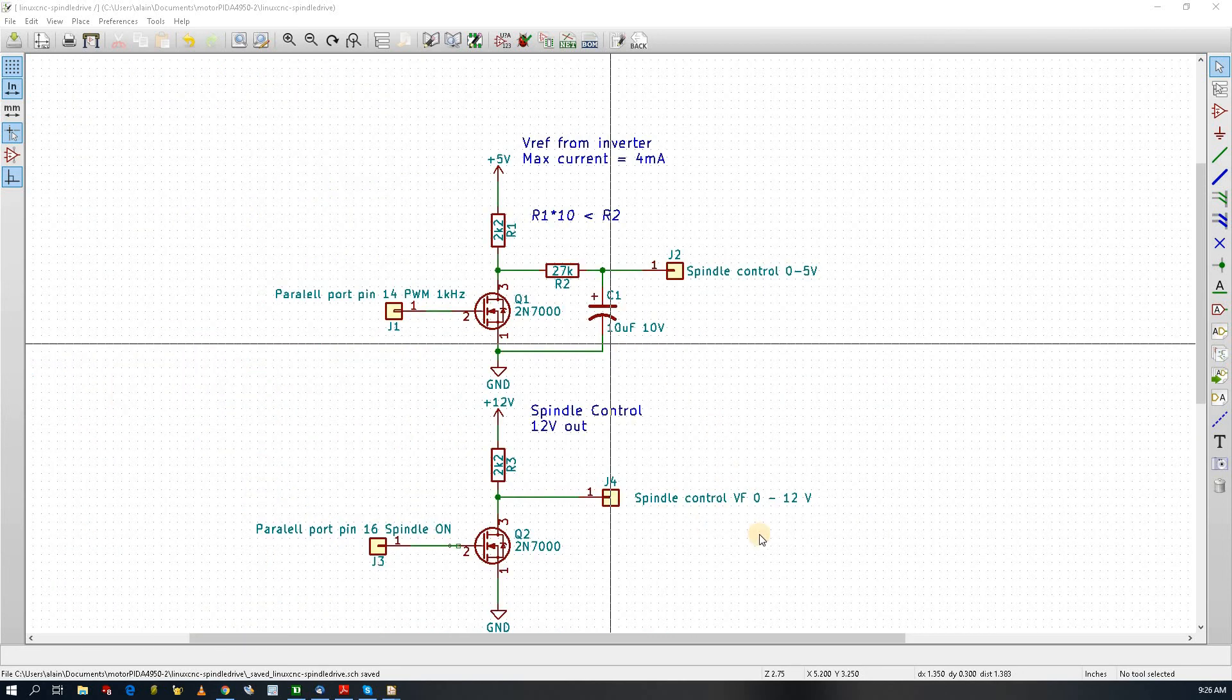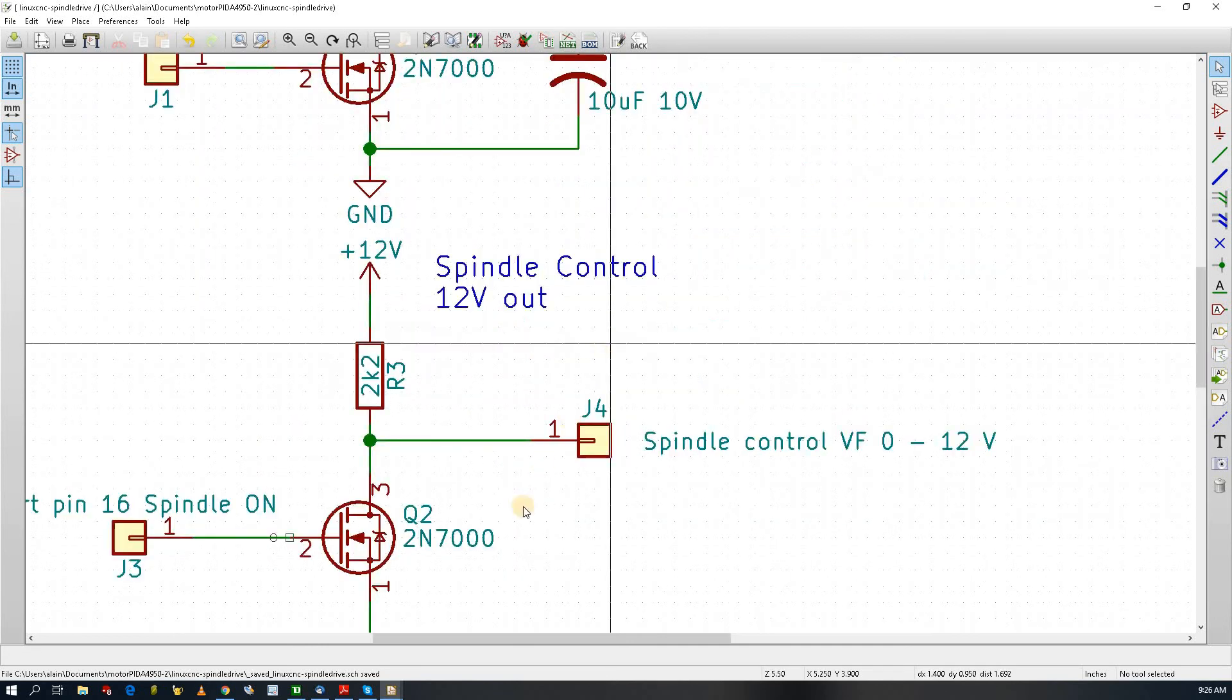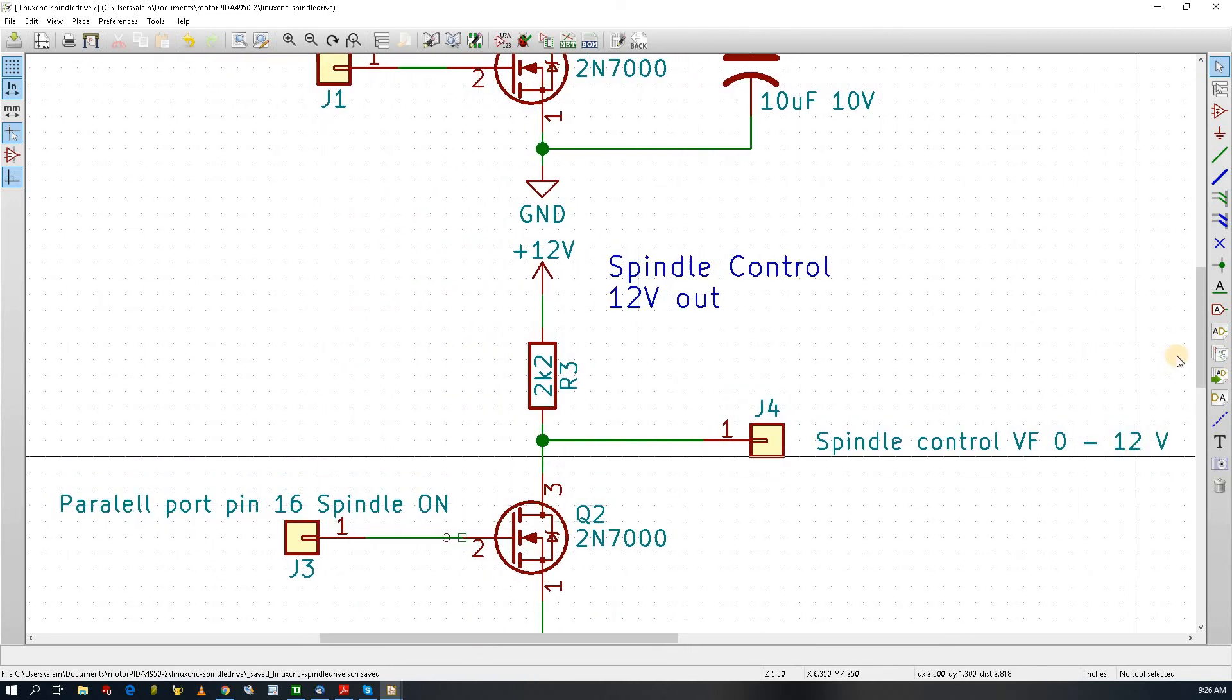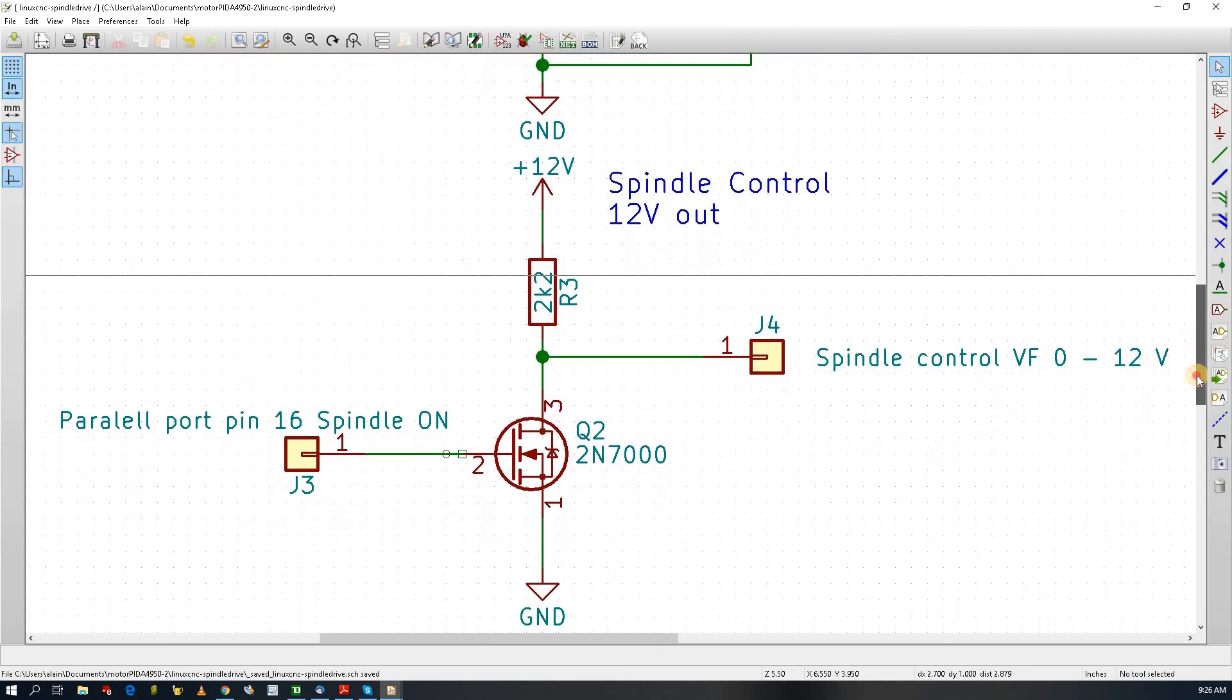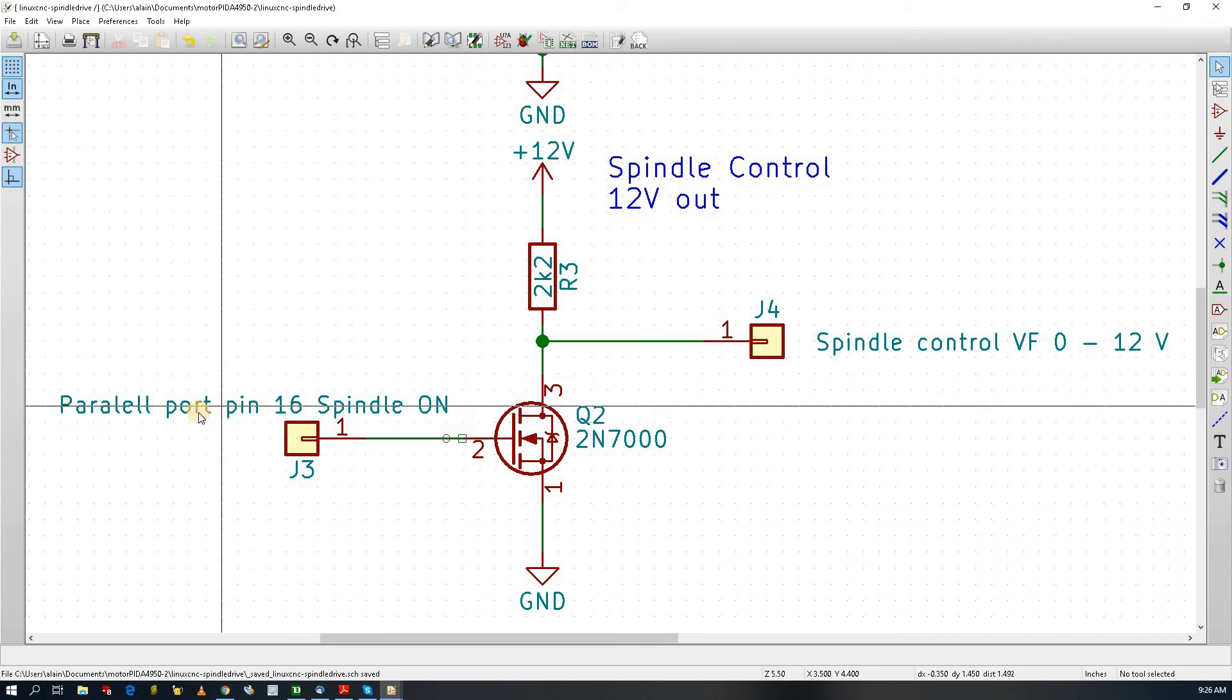Now the other problem was to level shift the parallel port to the 12 volts that the spindle control needs. My parallel port, this one is spindle on, that's the control from LinuxCNC and it's set at pin 16.